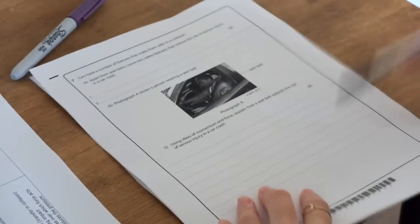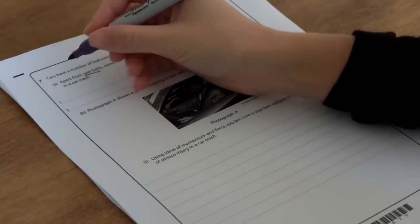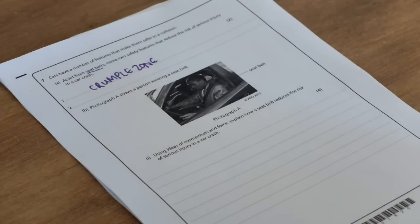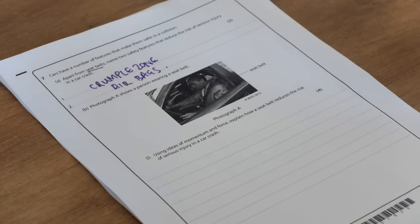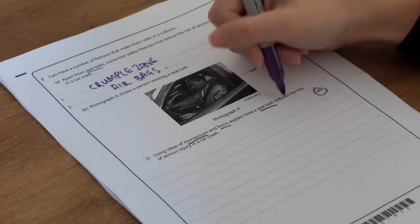I'm going to move on to a physics example now. This is a horrible question I've picked out to do with momentum. Cars have a number of features that make them safer in a collision. Apart from seatbelts, name two safety features that reduce the risk of serious injury in a car crash. So it says apart from seatbelts, so don't go mentioning seatbelts. The obvious thing here for me is a crumple zone, and that's at the front of the car. And there are airbags which you bounce off. Using ideas of momentum and force, explain how a seatbelt reduces the risk of serious injury in a car crash. And that's worth four marks.